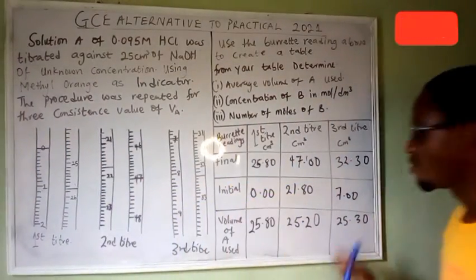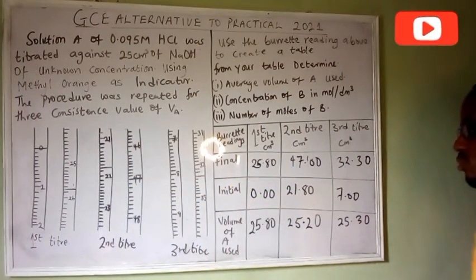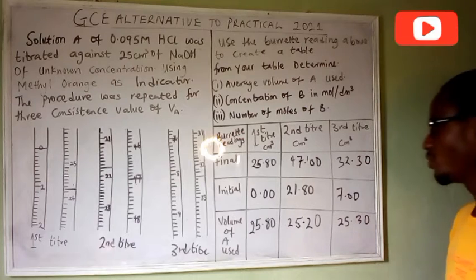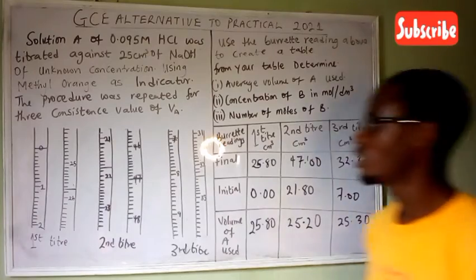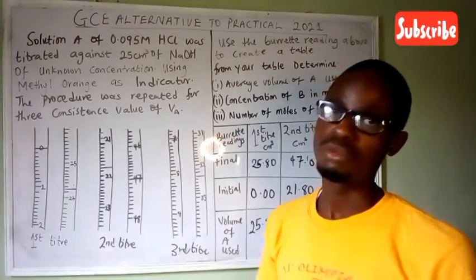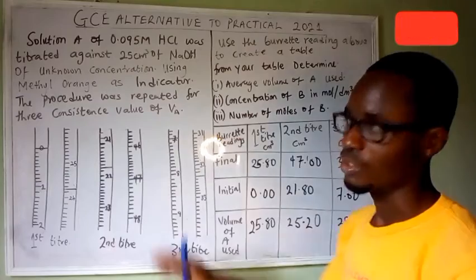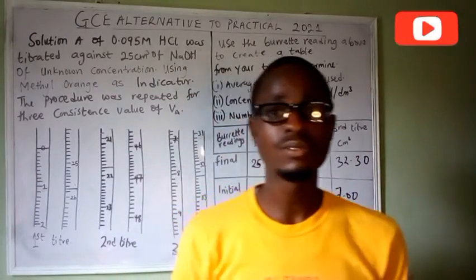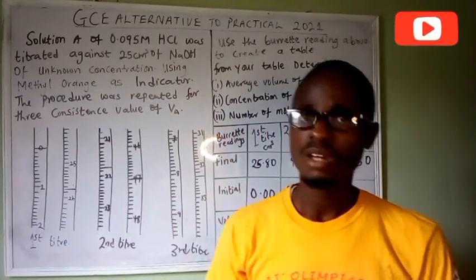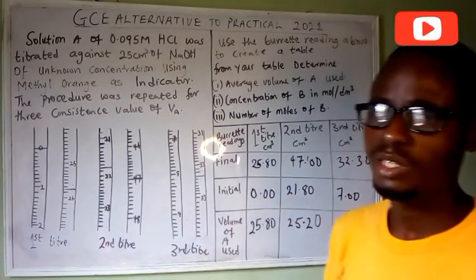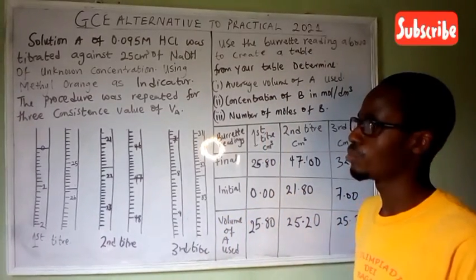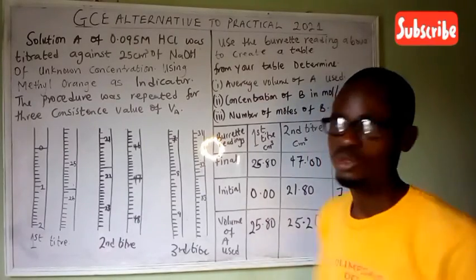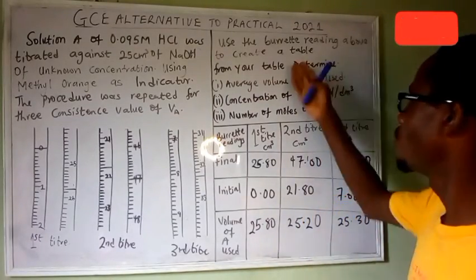These two values (25.20 and 25.30) are very close compared to the first one (25.80), so we can find the average volume using two of them, or all three. You can see how the burette reading is taken from the diagram. Alternative to practical simply involves taking readings from diagrams without performing the experiments, though you need to know the procedure of the experiment.